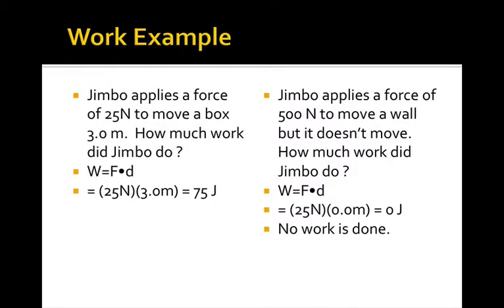So here's an example. Jimbo applies a force of 25 newtons to move a box, 3 meters. How much work did Jimbo do? Well, work equals force times displacement, so you substitute in 25 for force, 3 for displacement, which needs to be in meters. And that equals 75 joules. Notice that the units for work are the same as units for energy, because it takes energy to do work. Now, so in that case, 75 joules.